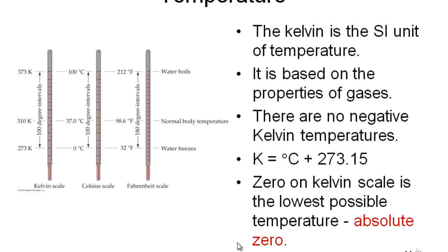The conversion between degrees Celsius and Kelvin is important because both scales are used in problems. Sometimes equations use Kelvin but the problem is given in degrees Celsius, so you have to convert. The conversion is: K = °C + 273.15 — roughly add 273 to the Celsius value to get Kelvin. Similarly, subtract 273 from Kelvin to get degrees Celsius.